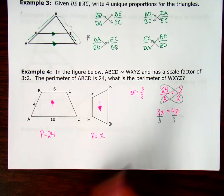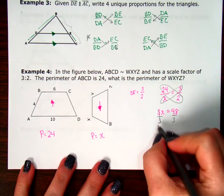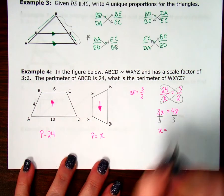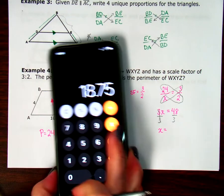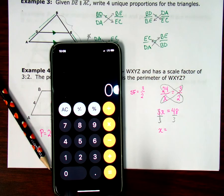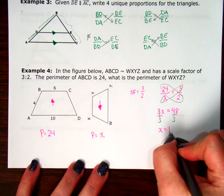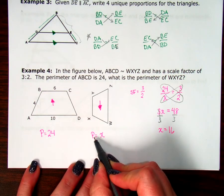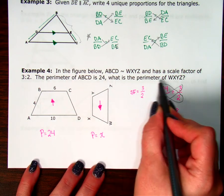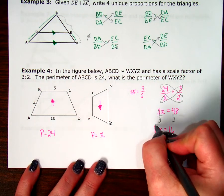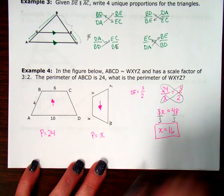And X equals 48 divided by 3. Again, I'm just going to use my regular old calculator. 48 divided by 3 is 16. So 16 is X, which is the perimeter of WXYZ. And that is what they were asking me to find. So my answer here is 16.